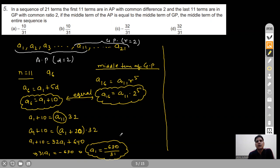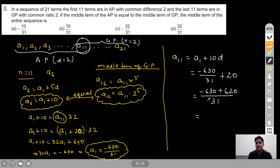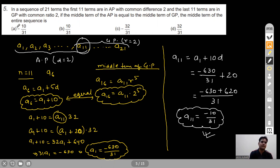The middle term of the entire 21-term sequence is A11. A11 = A1 + 10·2 = -630/31 + 20 = (-630 + 620)/31 = -10/31. So the middle term of the entire sequence is -10/31. Option A is correct.